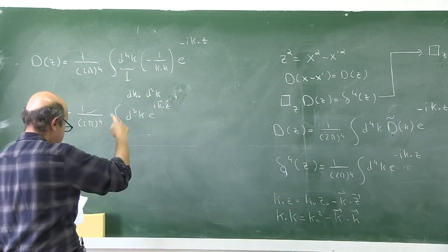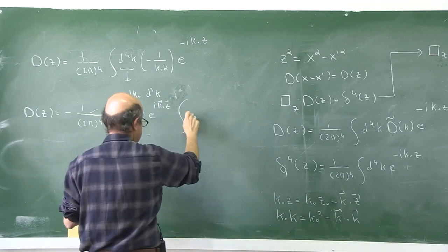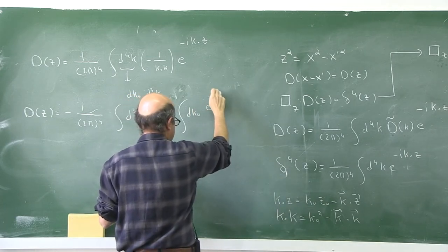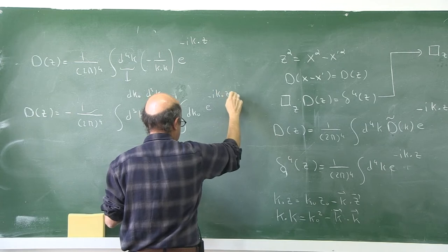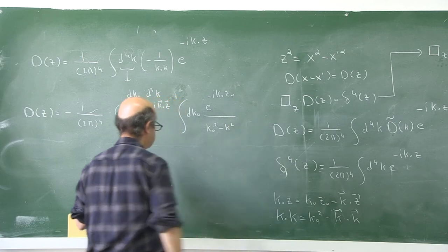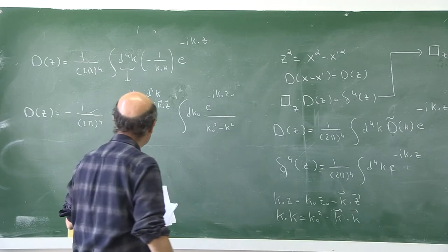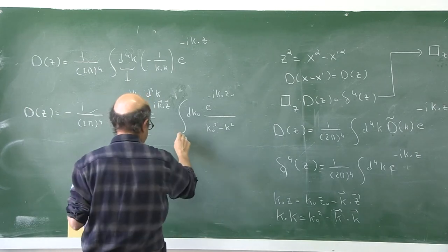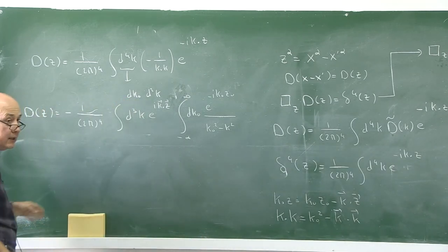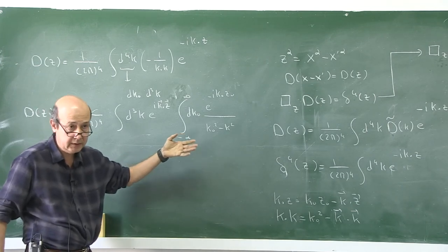The k⁰ integral must be taken from −∞ to +∞. This is a complex integral: the denominator k⁰² − k² = (k⁰ − k)(k⁰ + k) has poles at k⁰ = +k and k⁰ = −k, which lie on the real axis. So we must use contour integration and the residue theorem.